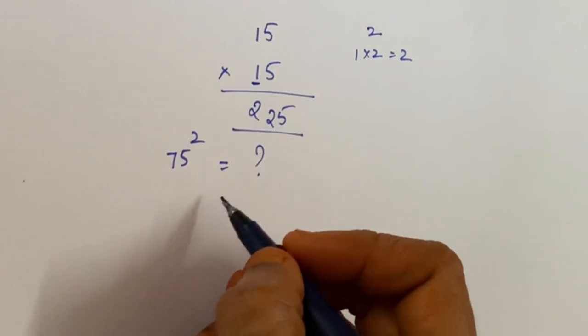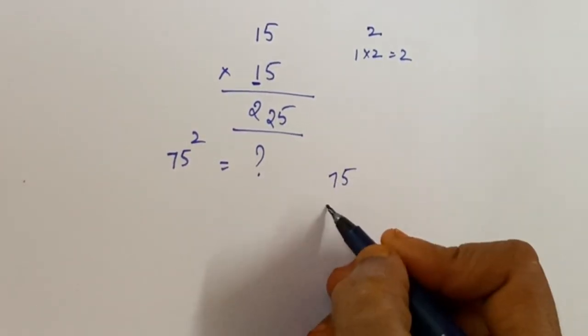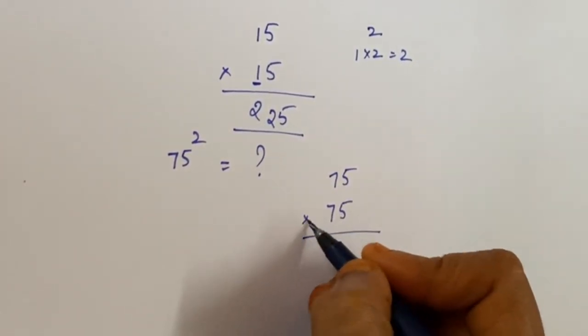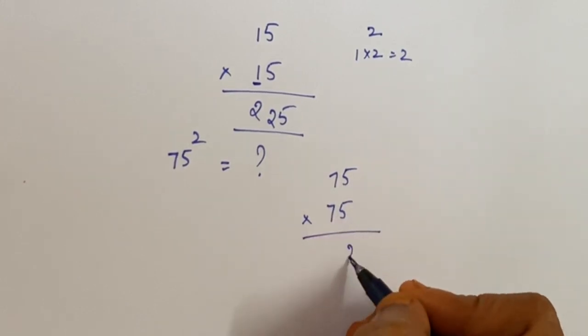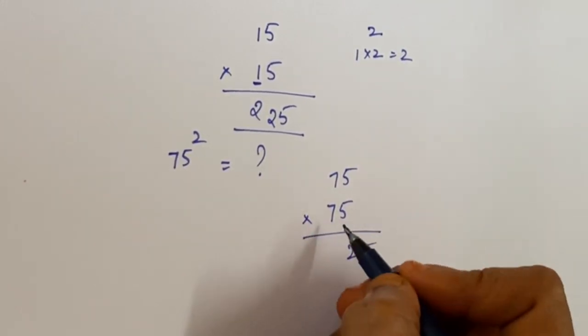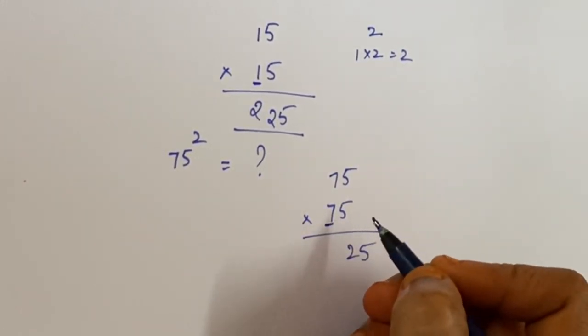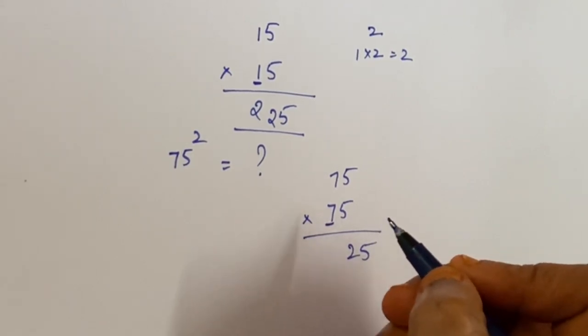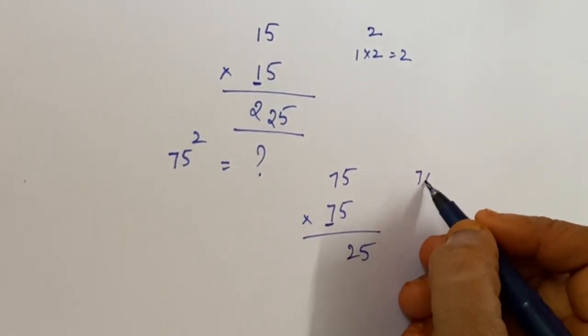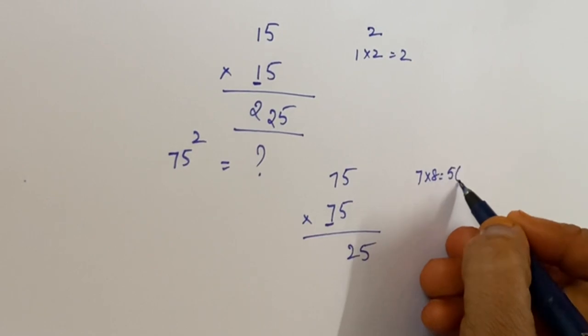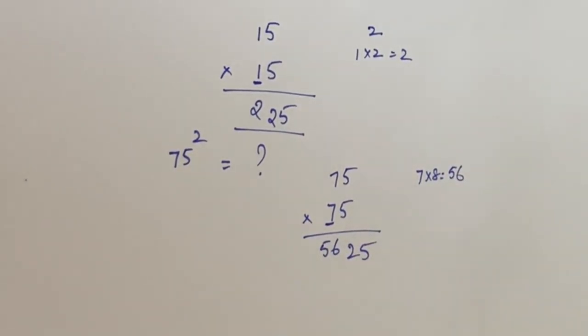So here, 75 × 75. First, 5 × 5 equals 25. Here the left hand side number is 7. The number after 7 is 8. 7 × 8 equals 56. So 5625 is the answer.